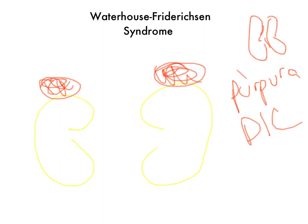You get thrombocytopenia because you're bleeding into a lot of things, and it can also be due to DIC. You get hypoglycemia, hyponatremia, and hyperkalemia because you're not getting aldosterone or glucocorticoids being secreted by the adrenal glands.